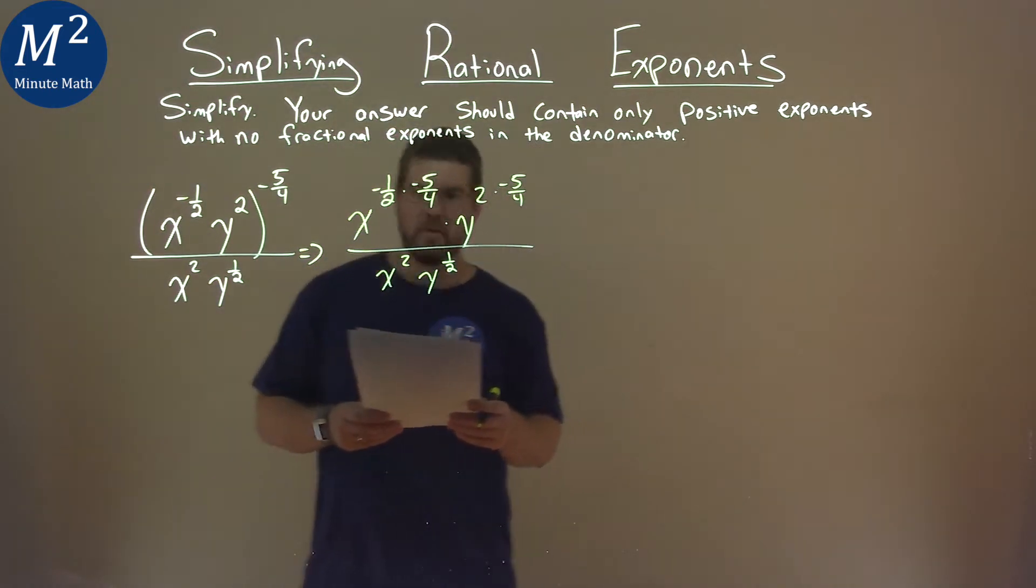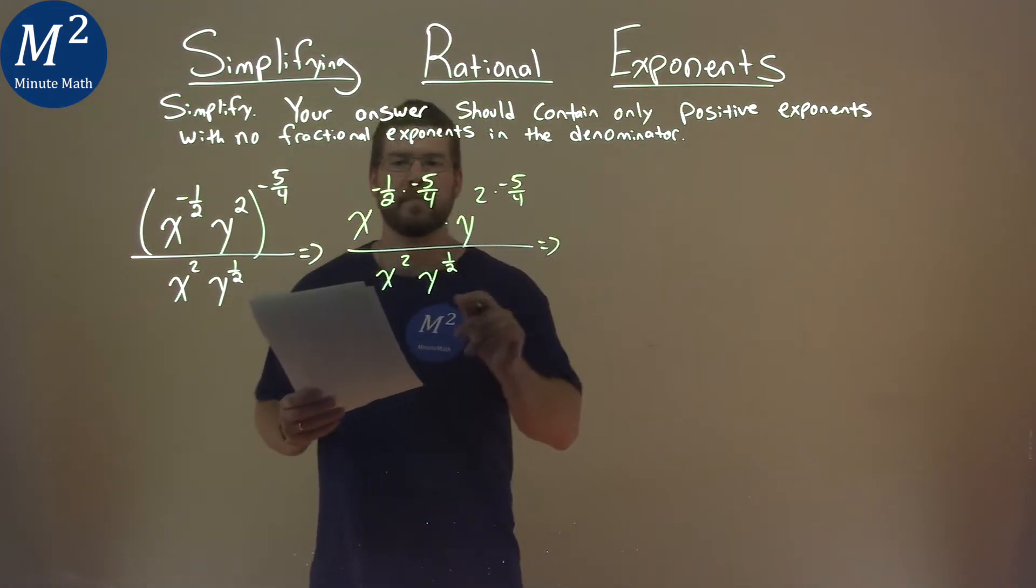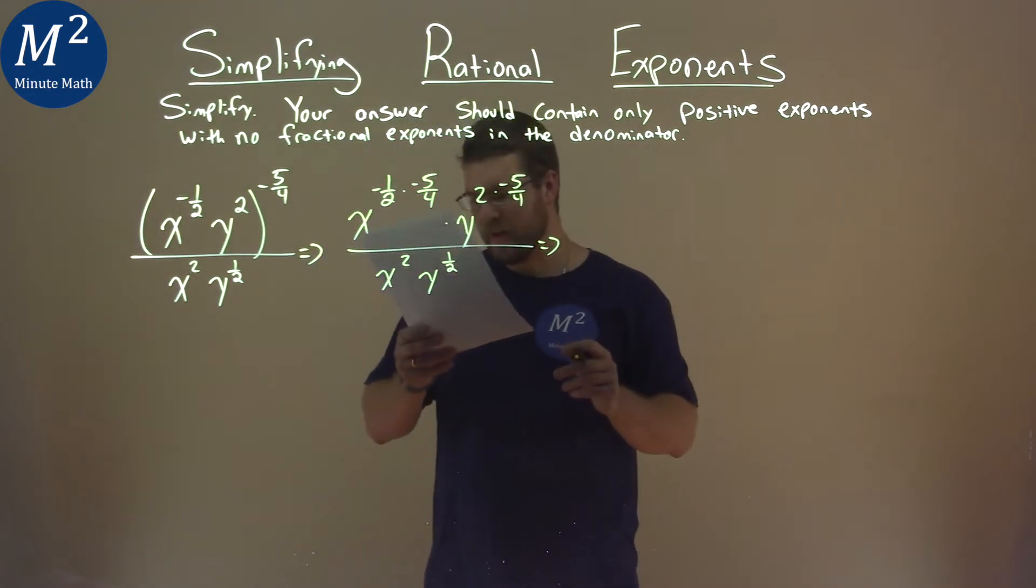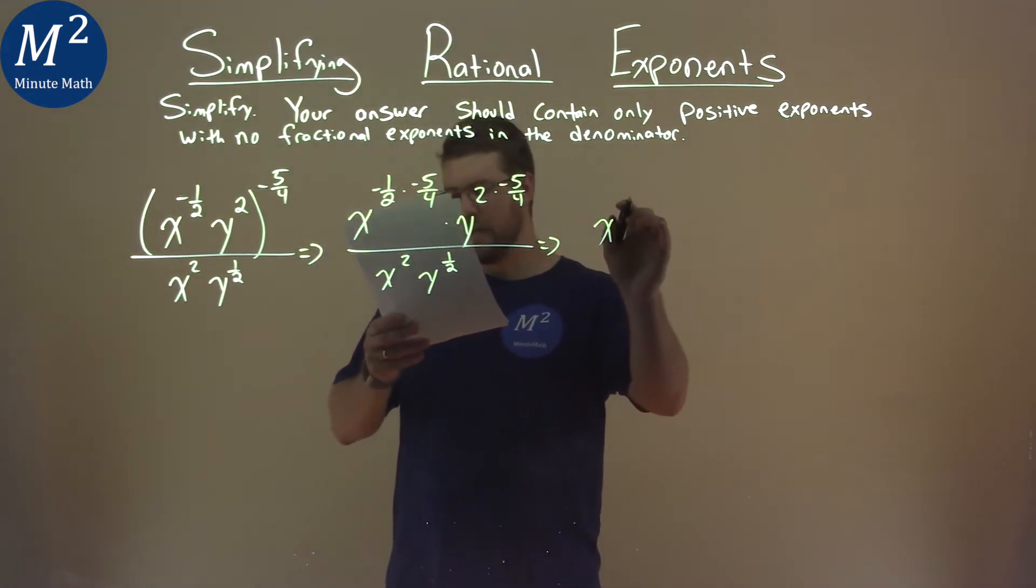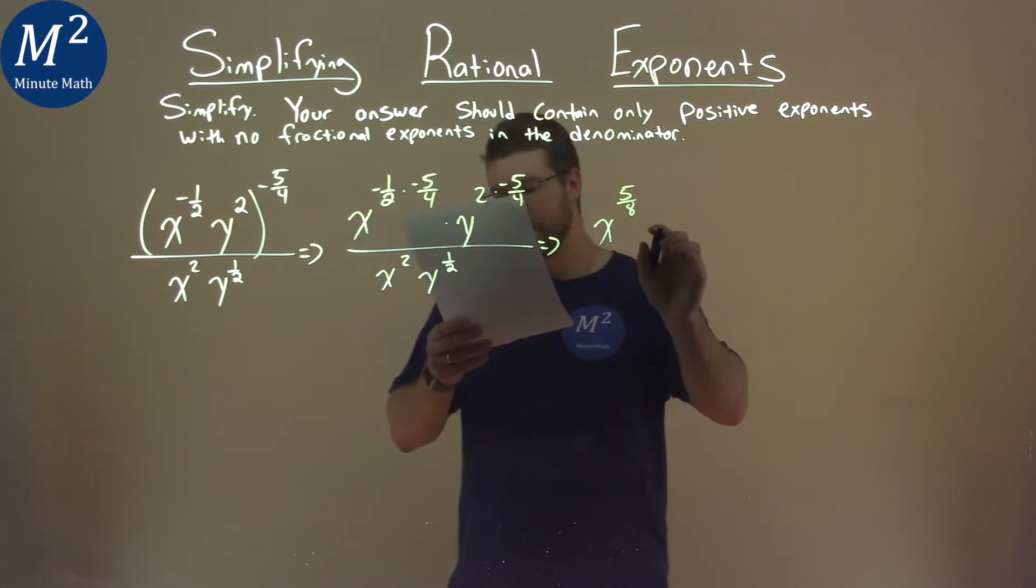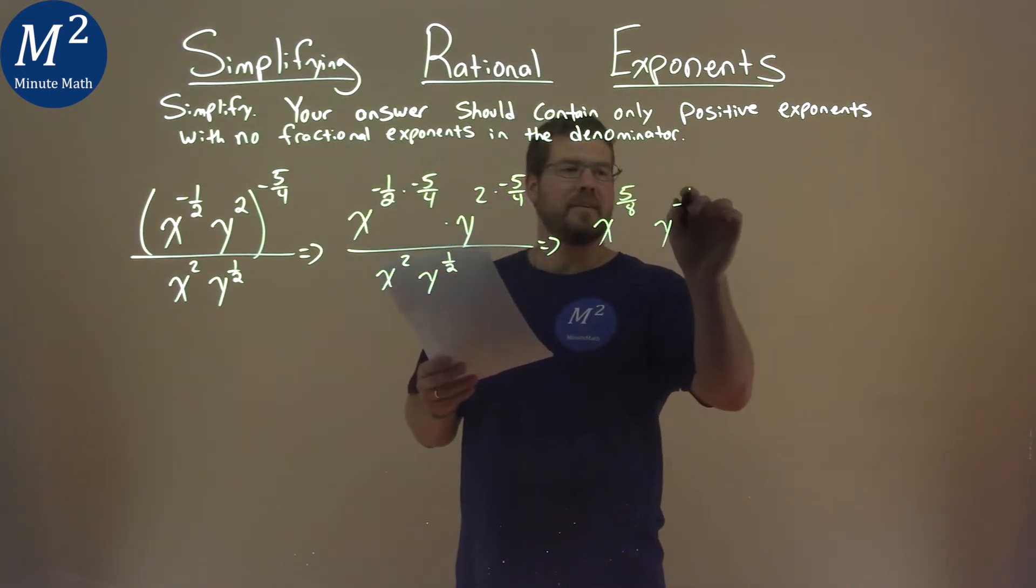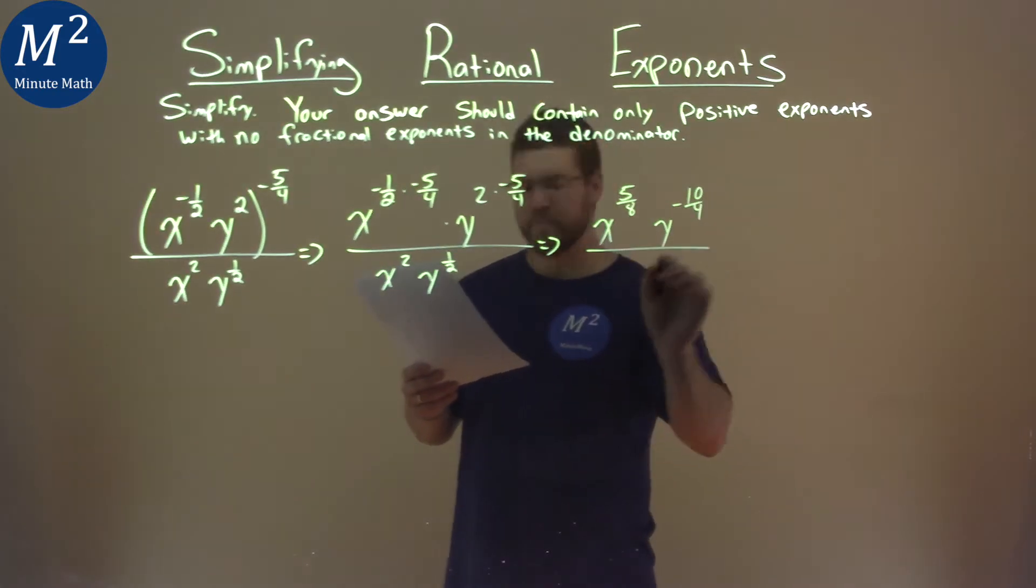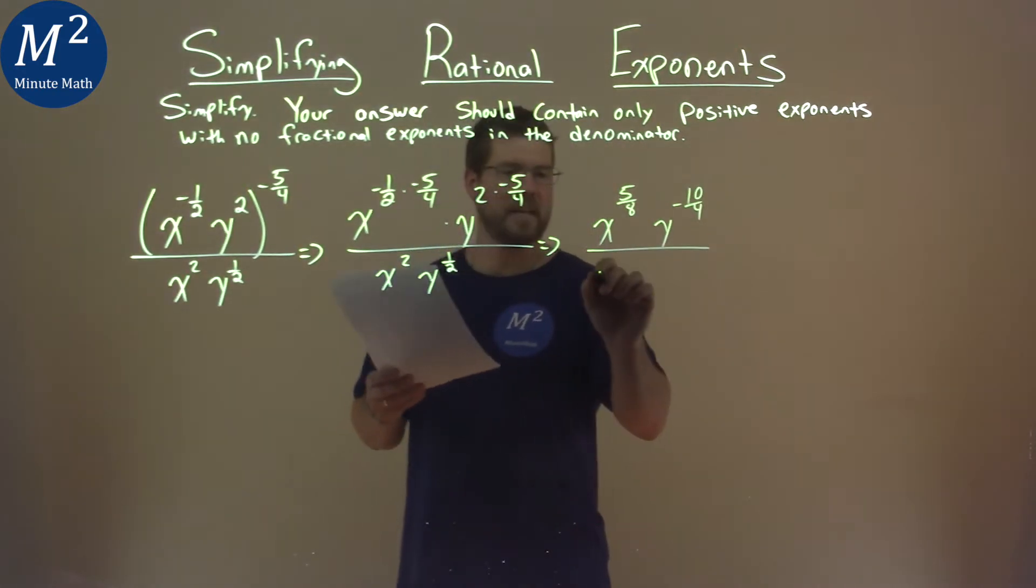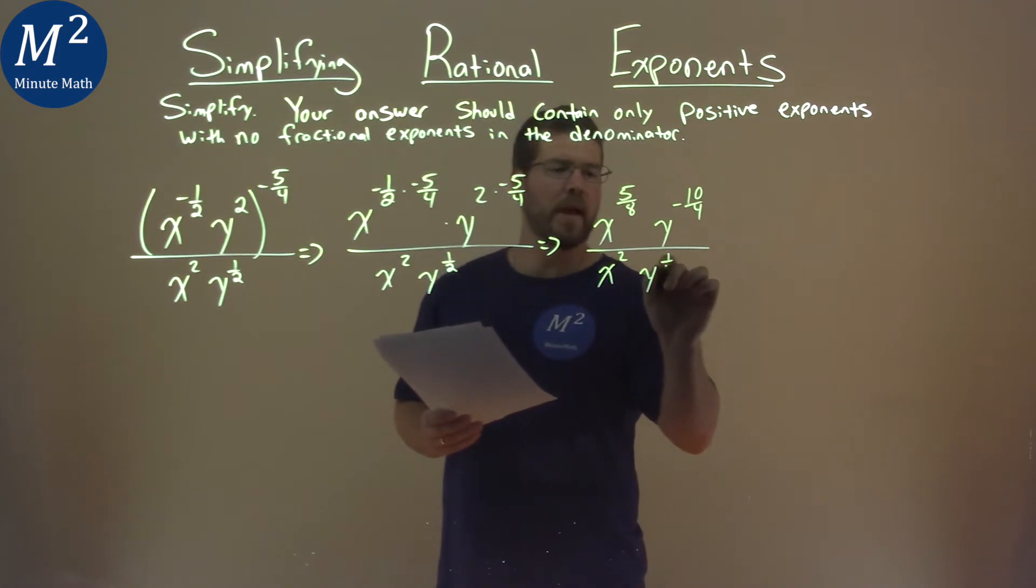Alright, let's go and multiply that out. Negative one-half times the negative five-fourths is a positive five-eighths, so we have x to the five-eighths power. 2 times negative five-fourths is y to the negative ten-fourths power, and the denominator will just stay the same for the moment, x squared, y to the one-half.